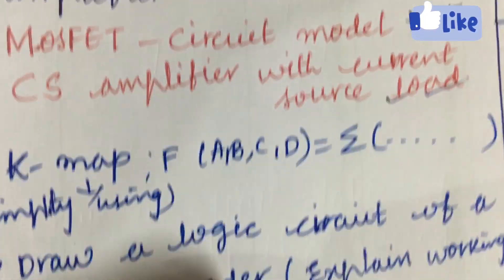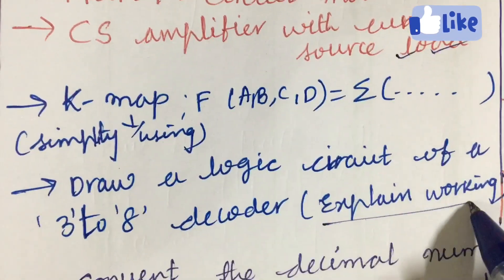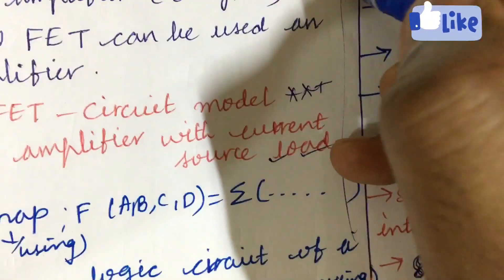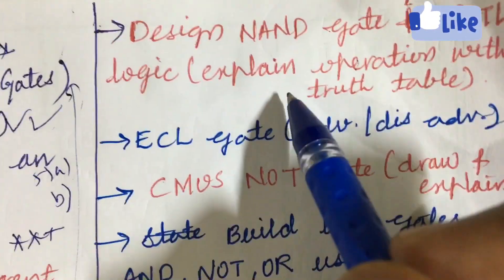Draw a logic circuit of a 3-to-8 decoder and explain its working is also one of the important questions. From this part we can expect 5A as well as 5B, dear students.